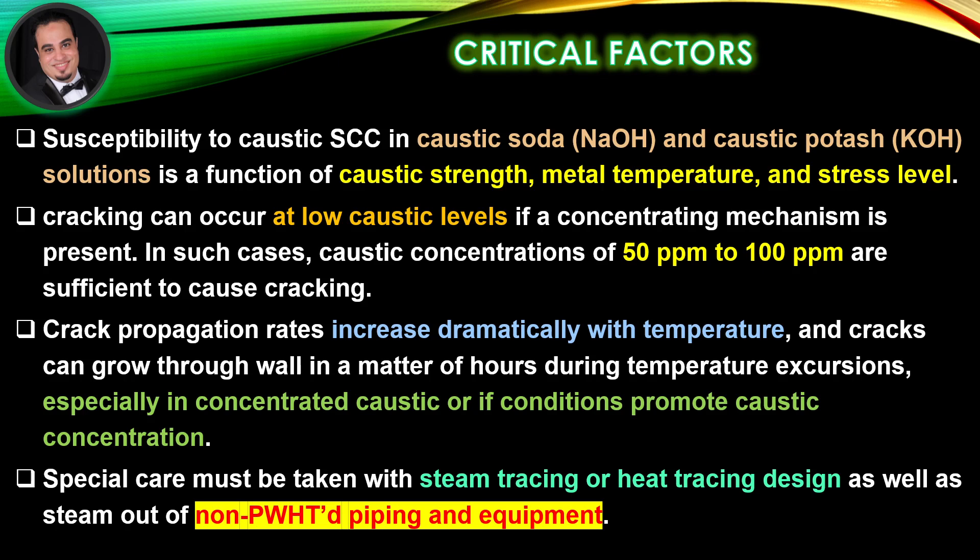In such cases, caustic concentrations of 50 to 100 parts per million are sufficient to cause cracking. Crack propagation rates increase dramatically with temperature, and cracks can grow through the wall in a matter of hours during temperature excursions, especially in concentrated caustic or if conditions promote caustic concentration.